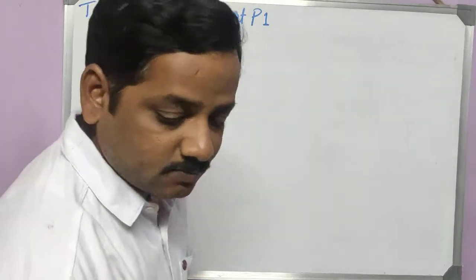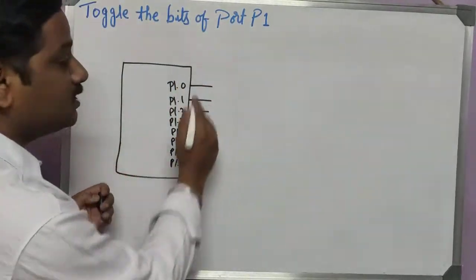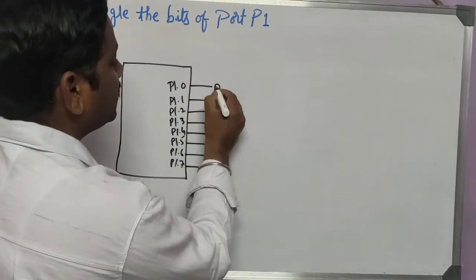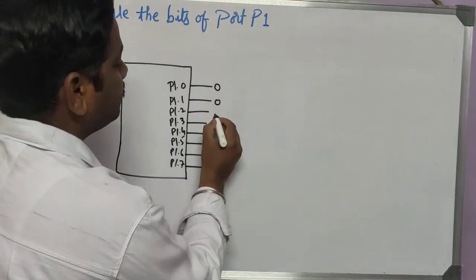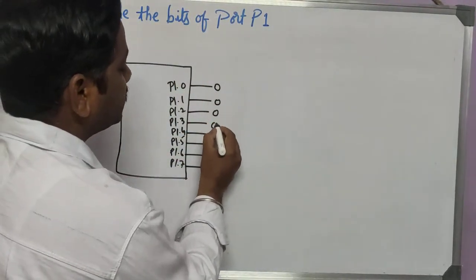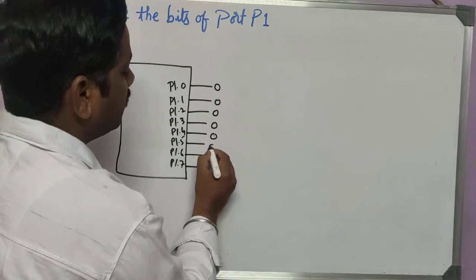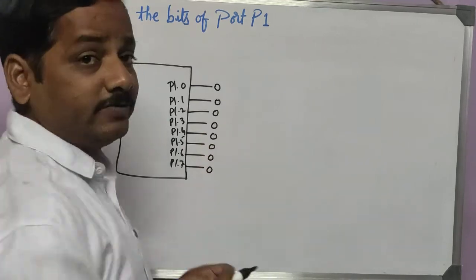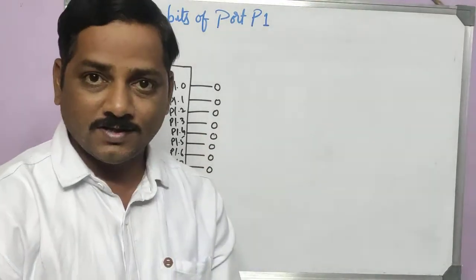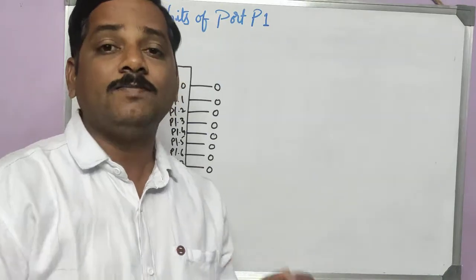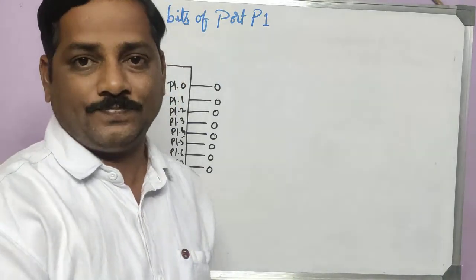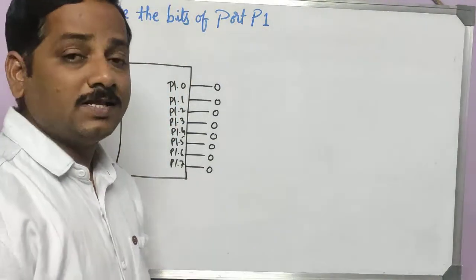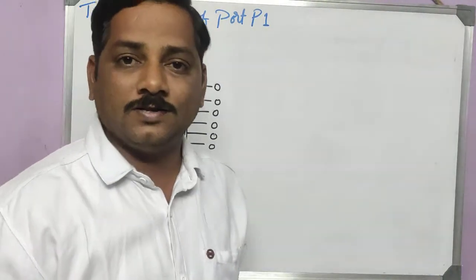So now, initially let us assume that all these bits are 0. We need to initialize them, so I will give all 8 bits of port 1 the value 0. After a fraction of a second, I will make them 1. That is nothing but toggling.